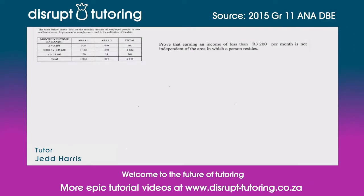Hey peeps, it's Jed here from Disrupt Tutoring and as always it's such a pleasure to join you today. We're going to deal with some probability. They've given us a table — they've surveyed some people in two areas and asked them specifically how much money they earn per month, grouped into certain income categories. They've said to us: prove that earning an income of less than 3200 rand per month is not independent of the area in which the person lives.